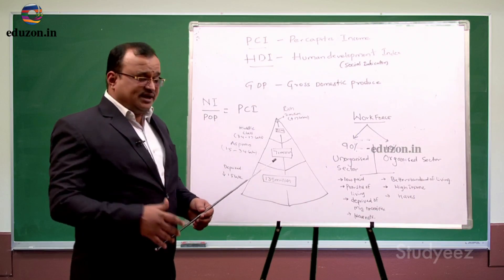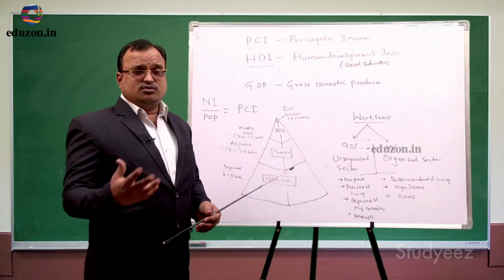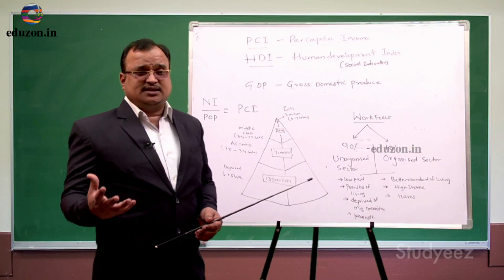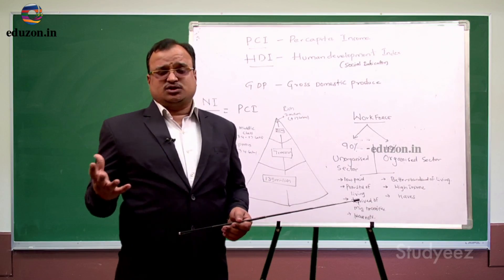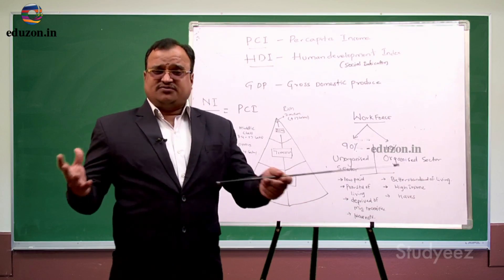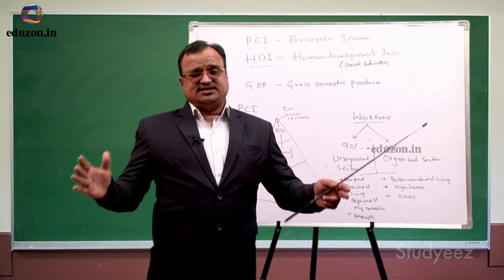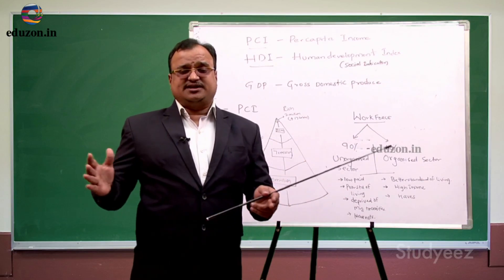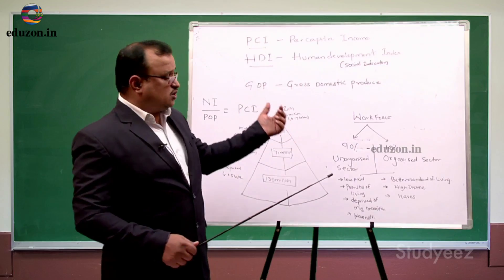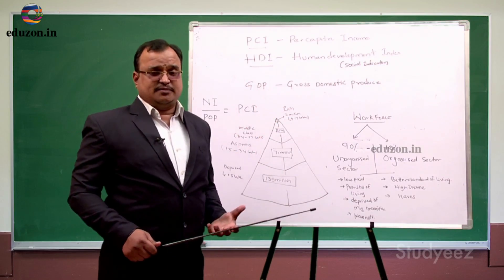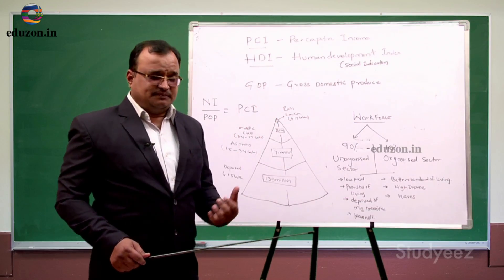We have one more indicator called Gross Domestic Product. GDP is nothing but the total production by all the factors of production across all three sectors — primary, secondary, and tertiary — put together in one particular financial year. That is called the GDP of a country.